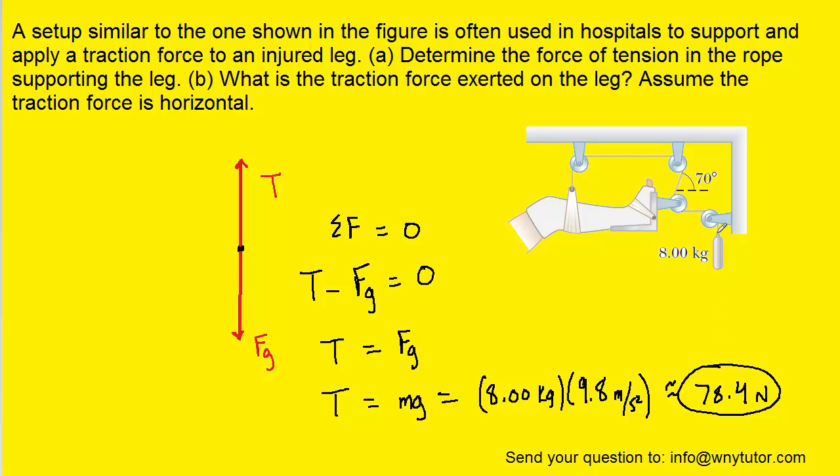And once again, the tension in that rope remains the same throughout. So even though the question is asking for the force of tension in the rope that's supporting the leg, we can use this tension as the answer to the question. So 78.4 newtons is part A. Let's move on to part B.